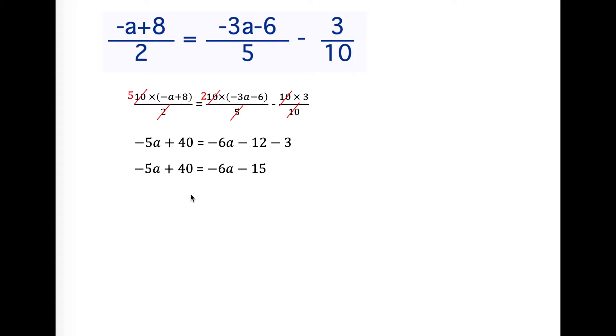Then I want to get all my a's on one side. I have more a's on the left hand side so it's going to be easier to add 6a to the right hand side to get rid of the 6a's over here. If I add 6a to the right hand side I also have to add 6a to the left hand side to balance everything out. I'm left with a+40 equals -15. I want to subtract 40 from both sides to get the a alone. We end up getting a equals -55.